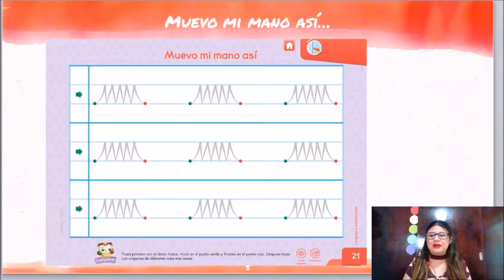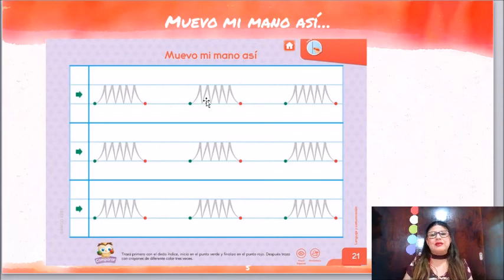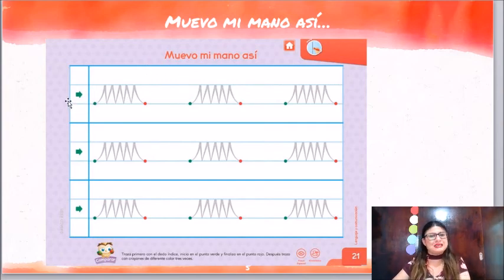Después, en tu siguiente hoja, que vas a buscar la número 21, que es un 2 con un 1, vamos a trabajar con el tema Muevo mi mano así. ¿Qué es lo que vamos a hacer? Vamos a realizar unos ejercicios de grafomotricidad.